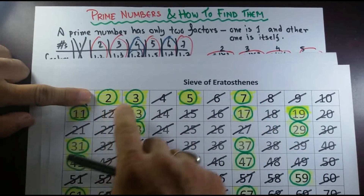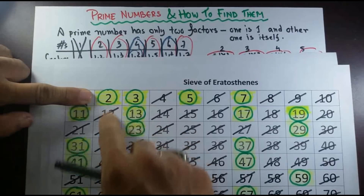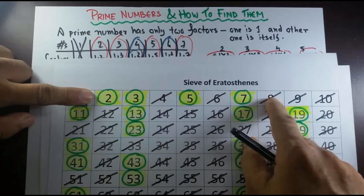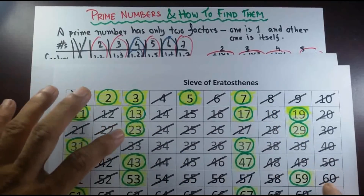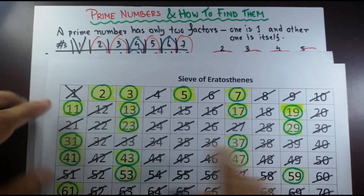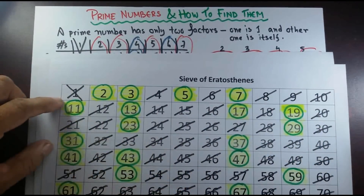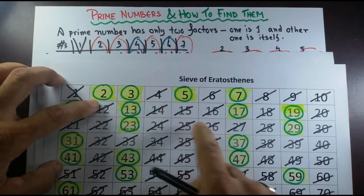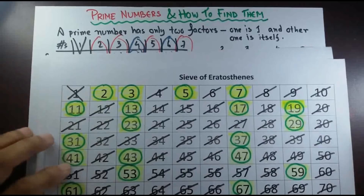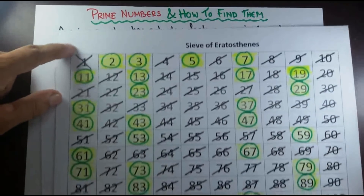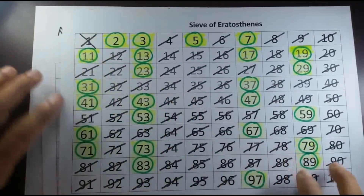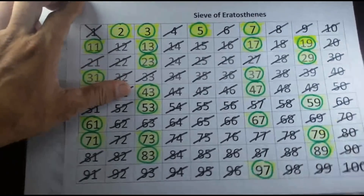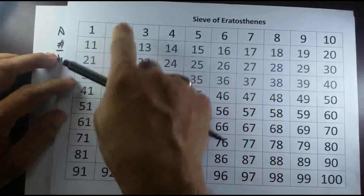Then what he did was cancel out all the multiples of 2 — 4, 6, 8, 12, and so on — he canceled all of them out. Whatever numbers are left, highlighted and circled in green, those are all the prime numbers. From 1 to 100, there are 25 prime numbers.